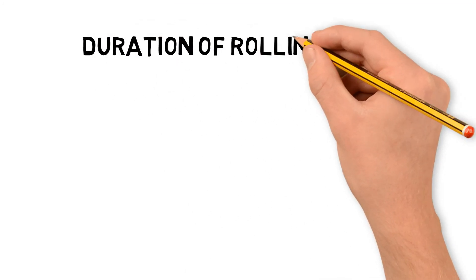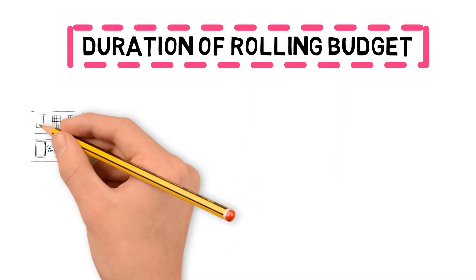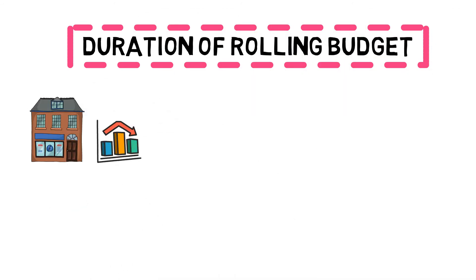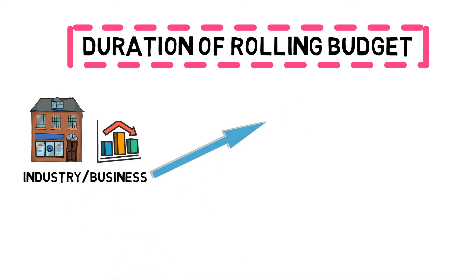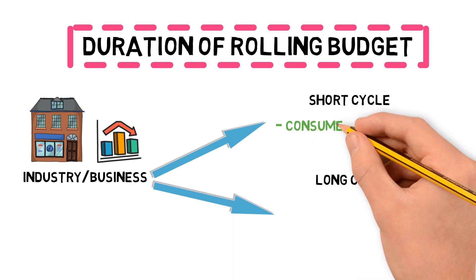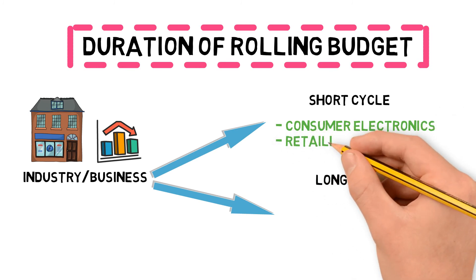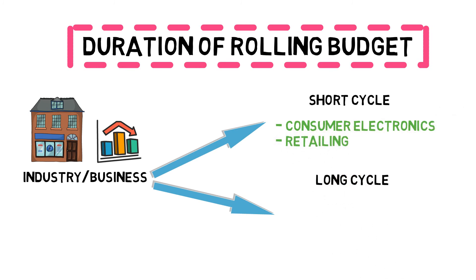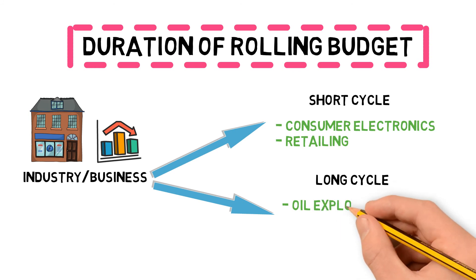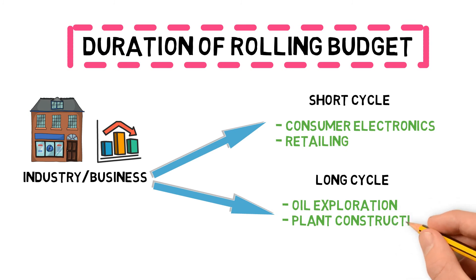Then we have the duration of rolling budget. The duration depends upon the industry or business cycle. Industry or business can have a short cycle or a long cycle. Short cycle can be observed in consumer electronics and retailing, whereas long cycle may be observed in businesses like oil exploration and plant construction.